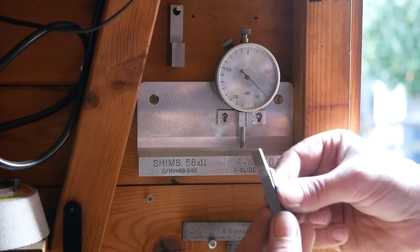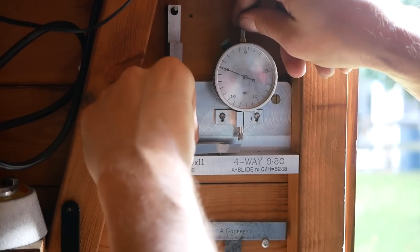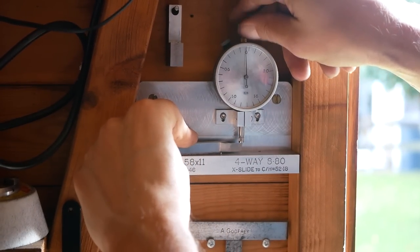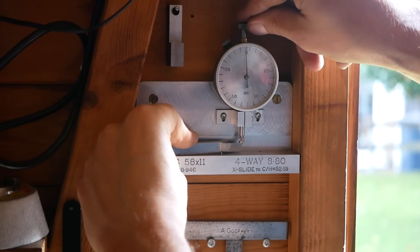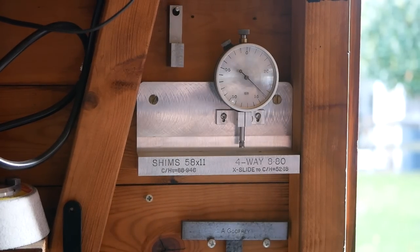Once the required shim thickness has been assembled from a well-organised array of shims, the tool with its shims can be placed back onto the fixture to check the needle is close to zero.